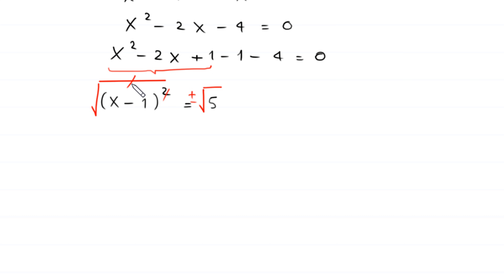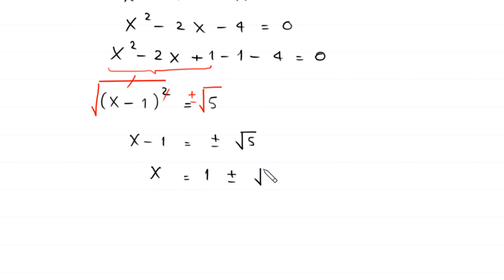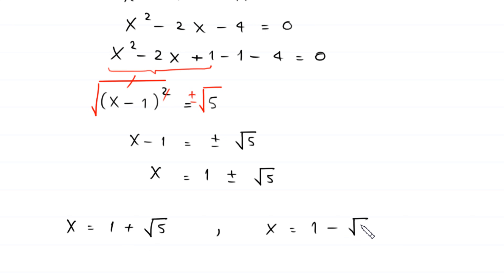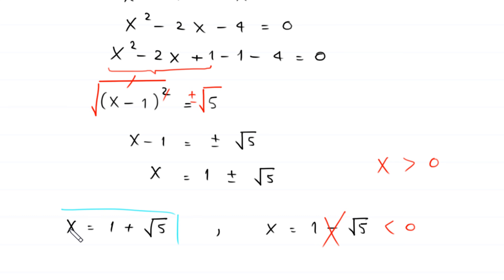Therefore x equals 1 ± √5, giving two values: x equals 1 + √5 or x equals 1 − √5. Since x must be greater than 0, and 1 − √5 is less than 0, we reject that value and accept x equals 1 + √5.